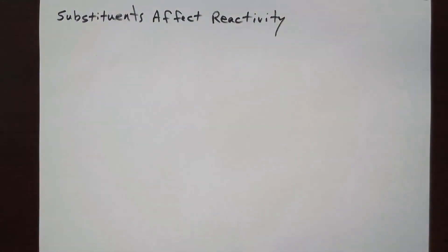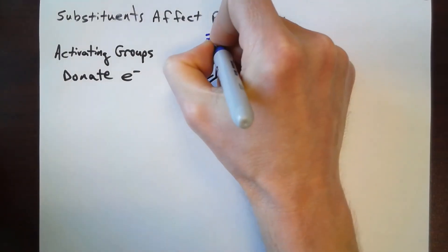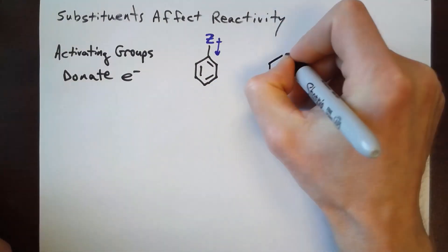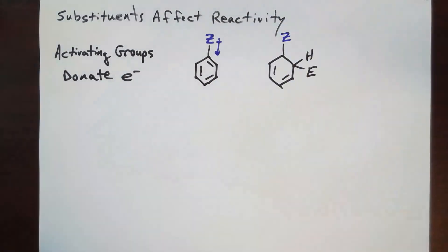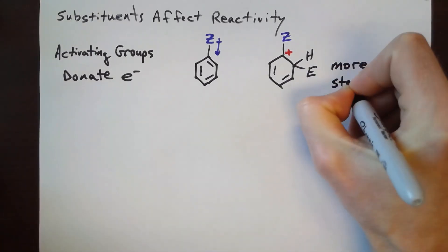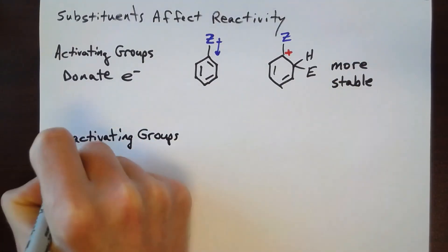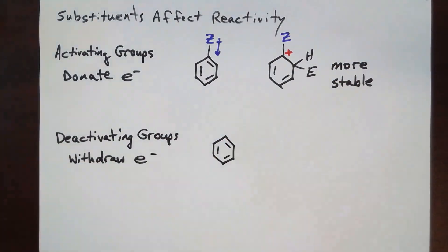Benzene substituents affect the reactivity toward electrophilic aromatic substitution reactions. The intermediate is positively charged, so substituents that stabilize this positively charged intermediate increase the reactivity of the benzene ring. Electron-donating substituents stabilize the intermediate.